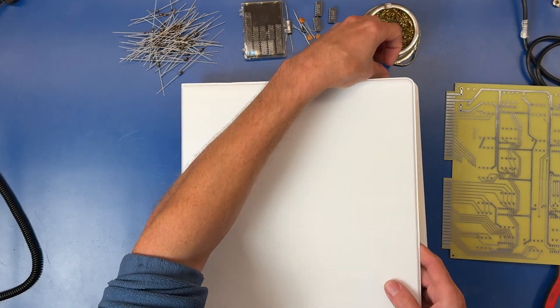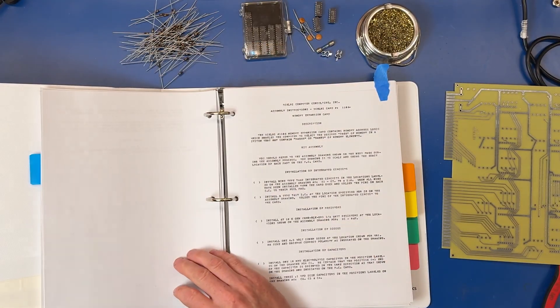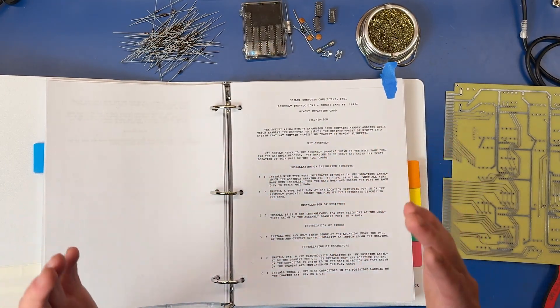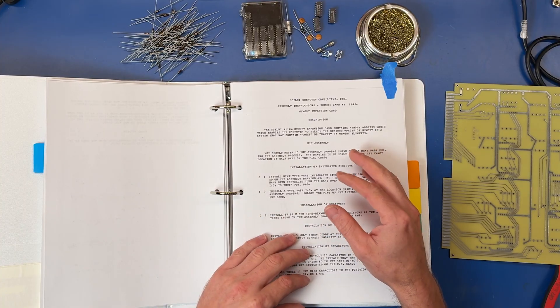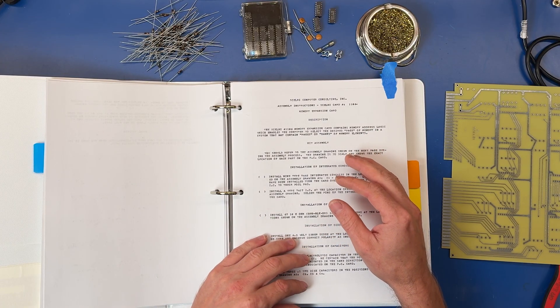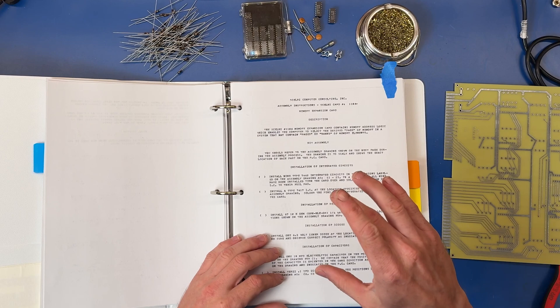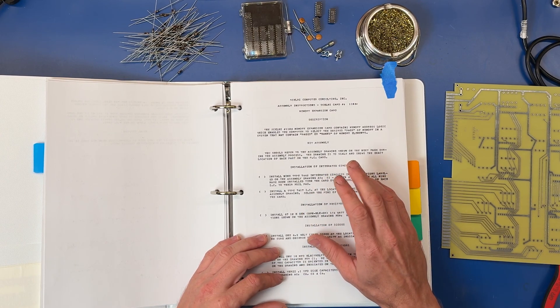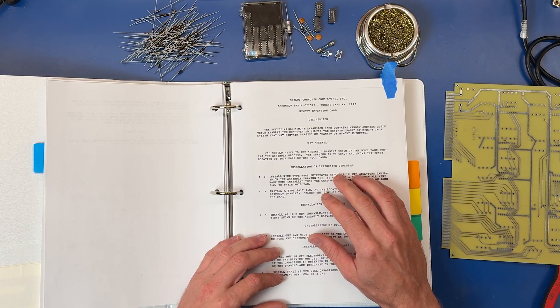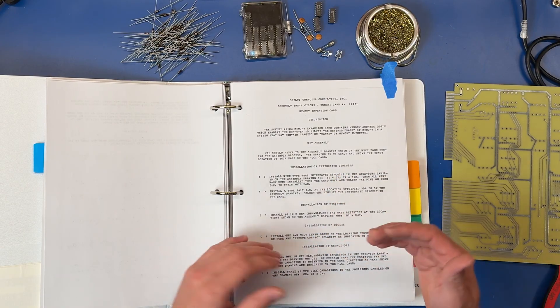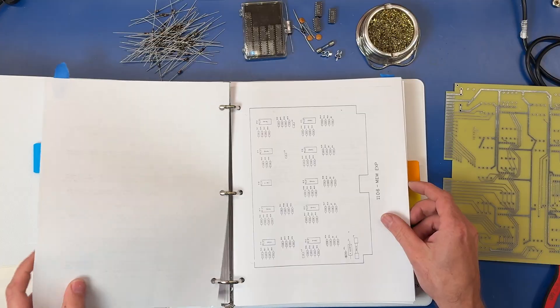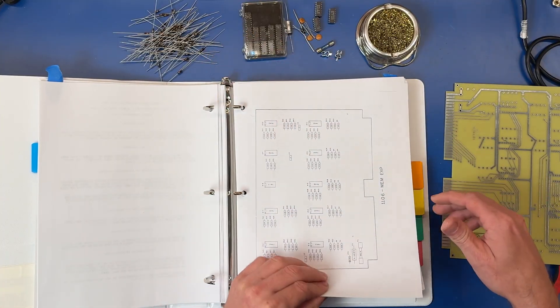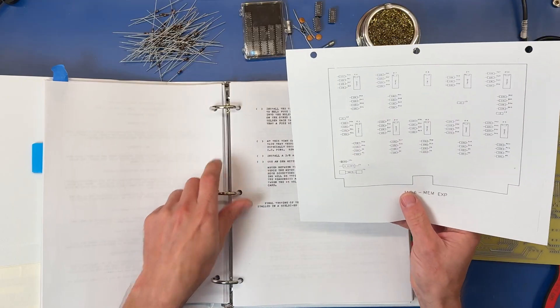Let's open up our manual here and take a look at the assembly instructions. The assembly instructions, just like pretty much every single board in the computer aside from maybe the CPU board, are pretty basic. You assemble or solder the ICs - in our case we'll be doing the IC sockets - resistors, diodes, capacitors. They're all pretty much the same. And we have this parts layout. I'll take it out just so I can reference it while I'm assembling the board.